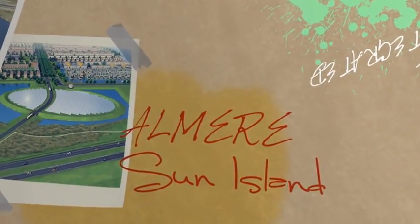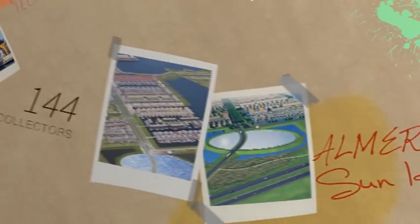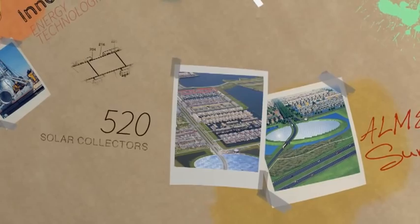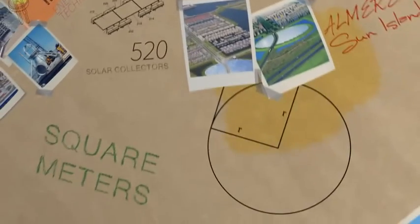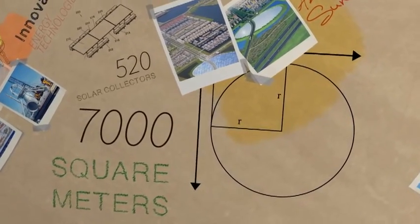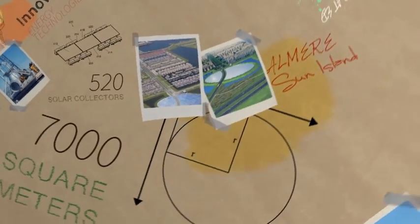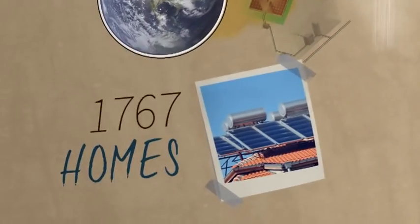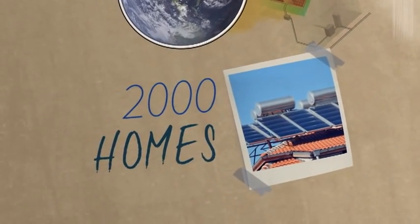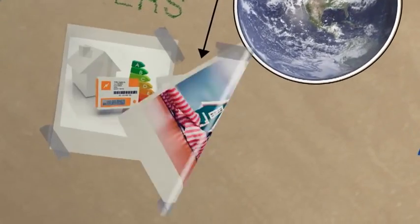The Almir Sun Island is a good example. The island of 520 solar collectors covers an area of 7,000 square meters, one of the largest solar collector fields in the world, and converts sunlight into hot water, heating 2,000 homes. All this combined with energy efficiency measures.